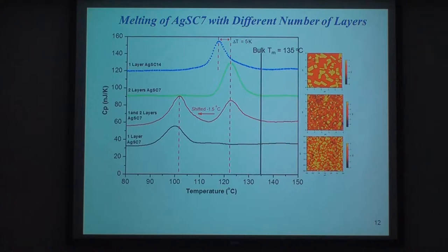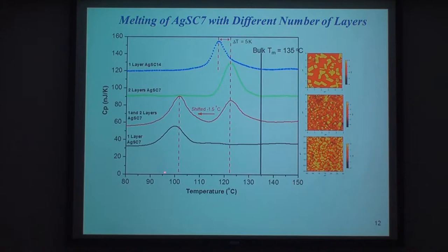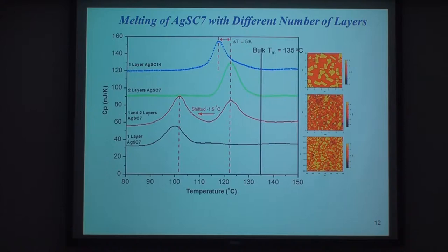Furthermore, as mentioned, we can synthesize single and double layer AgSR. What we found is there is a big melting point depression between bulk multi-layer AgSR, which melts at around 135 degrees, and single-layer AgSR. For single-layer AgSC7—seven carbons—it melts at around 100 degrees: a 35-degree change in the melting point going from multi-layer to single-layer crystals. For two-layer crystals of AgSC7, it melts at around 124 degrees. So you can see the effect: purely one layer with no interface melts lowest; adding an interface by having two-layer crystals increases the melting point; and with bulk multi-layer crystals you get the bulk melting point at 135.